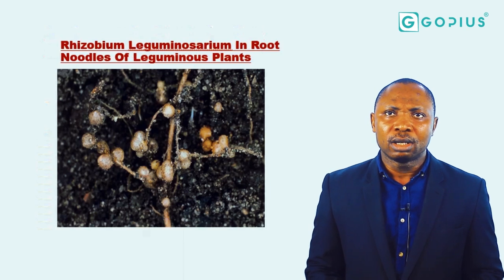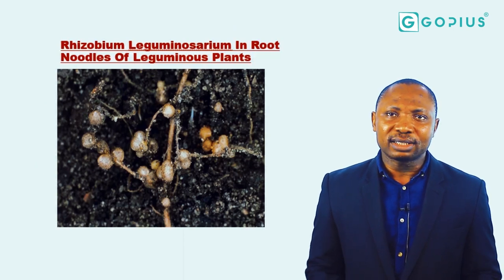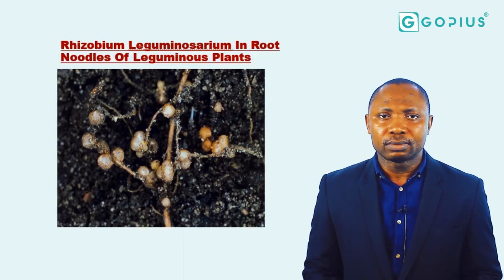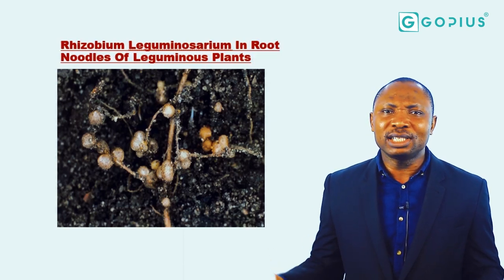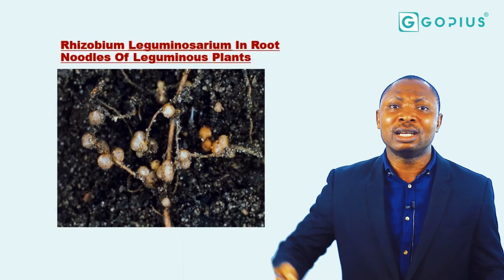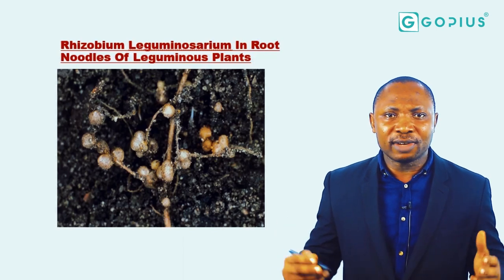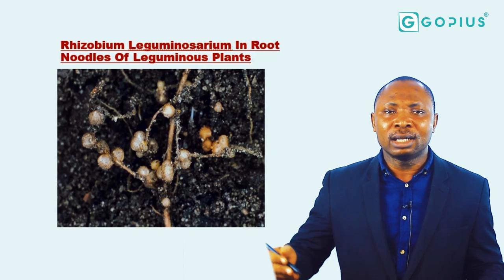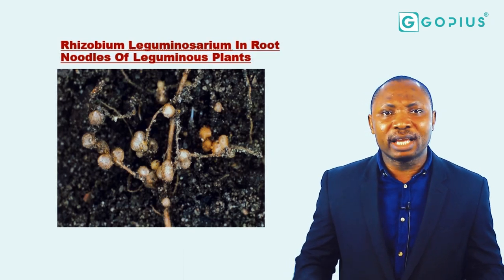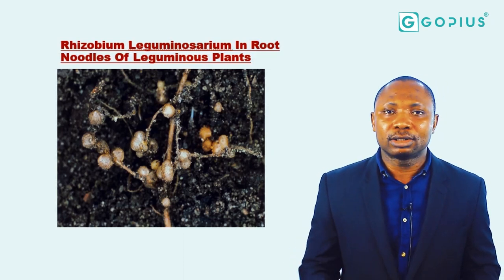The next example is Rhizobium leguminosarum in the root nodules of leguminous plants. The bacteria fixes atmospheric nitrogen into the root nodules of these leguminous plants. Once it fuses nitrogen into the root nodules, the leguminous plant is able to produce protein because of the presence of nitrogen — the plant would otherwise be deficient in nitrogen. In return, the Rhizobium leguminosarum gains carbohydrates from the root nodules of these leguminous plants. So that's how the two of them gain from each other.